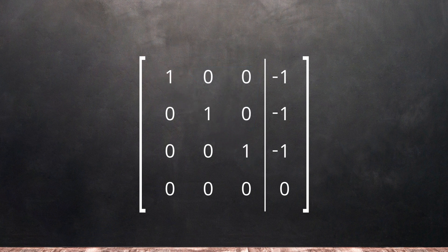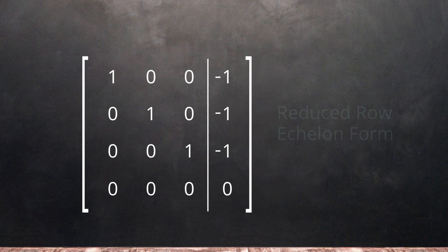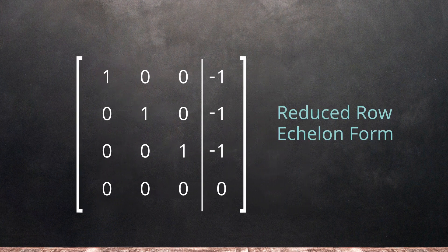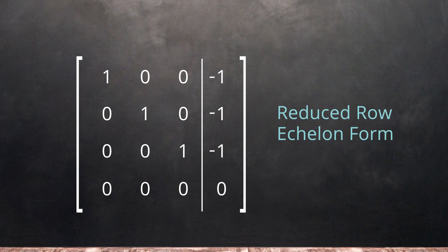We've now completed our Gaussian elimination and our matrix is in reduced row echelon form. Now we can use it to determine the solution to the system.